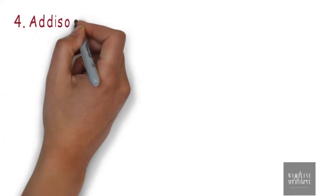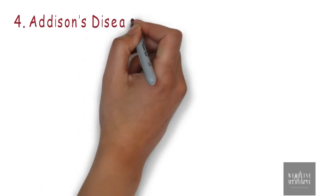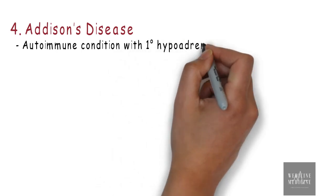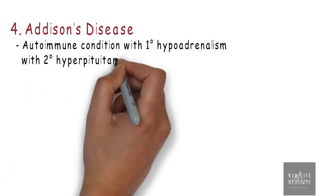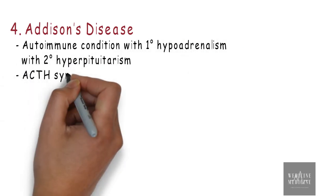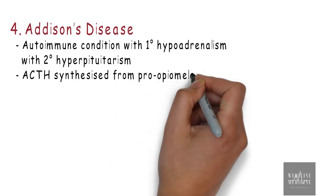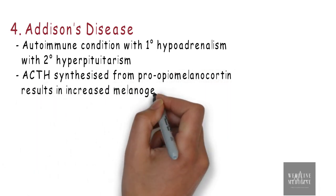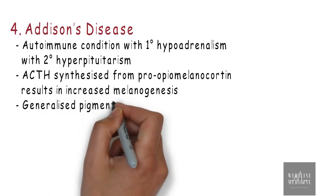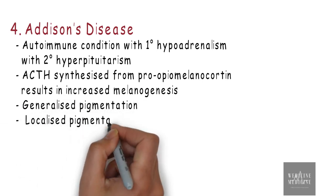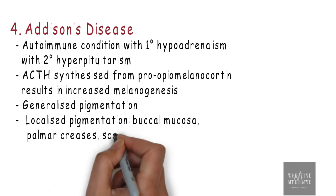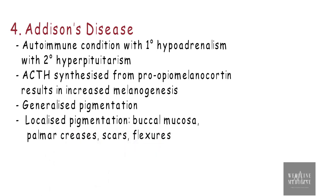Hyperpigmentation disorder can also result from Addison's disease, which is an autoimmune condition with primary hypoadrenalism and secondary hyperpituitarism. ACTH synthesized from pro-opiomelanocortin results in increased melanogenesis, causing generalized pigmentation or localized pigmentation in the buccal mucosa, palmar creases, scars, and flexures.